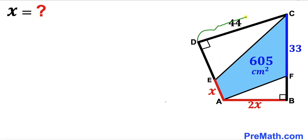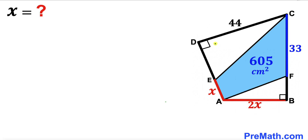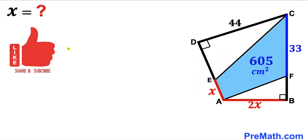Side length CD is 44 centimeters and side length AB is 2x. Furthermore, angle EDC is 90 degrees and likewise angle ABF is 90 degrees as well. Our task is to find the value of X.